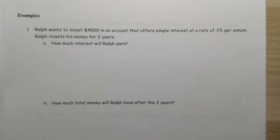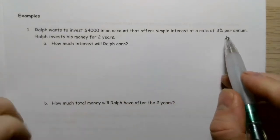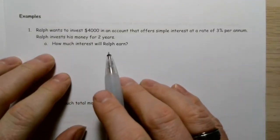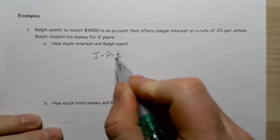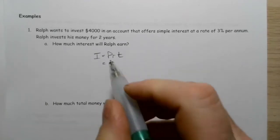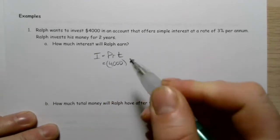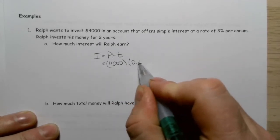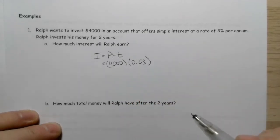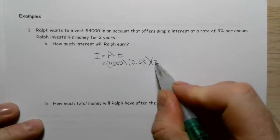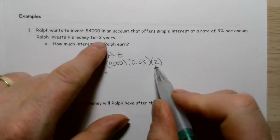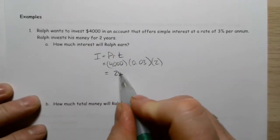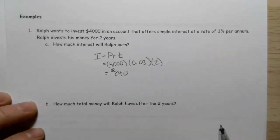In this example, Ralph wants to invest $4,000 in an account that offers simple interest at a rate of 3% per annum, and he invests his money for two years. How much interest will he earn? Well, interest is his principal multiplied by his rate and the time. So the principal is $4,000, the rate is 3%, which is 0.03 as a decimal, and for two years we multiply by two. He's going to earn $240 in interest.